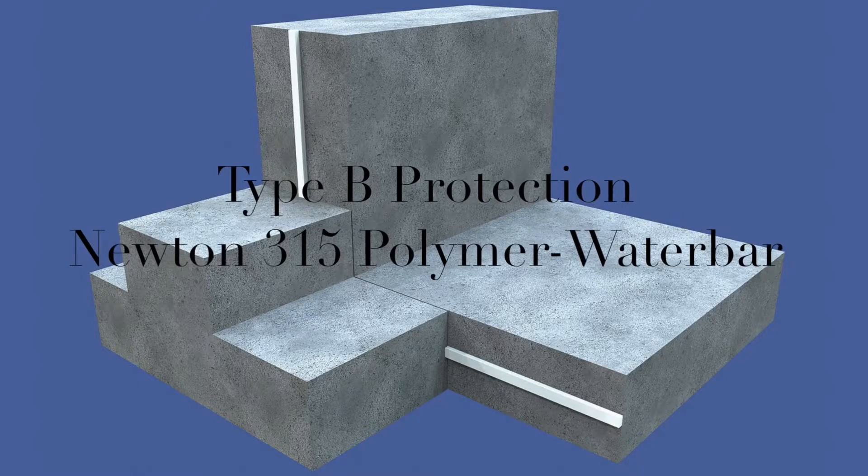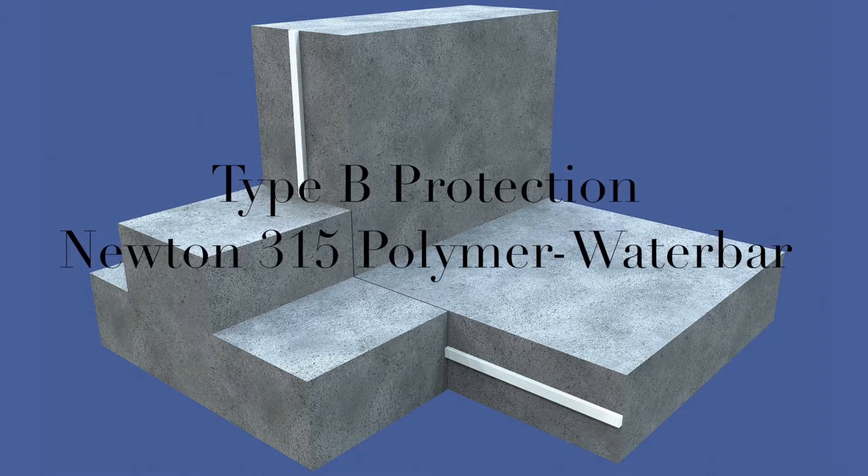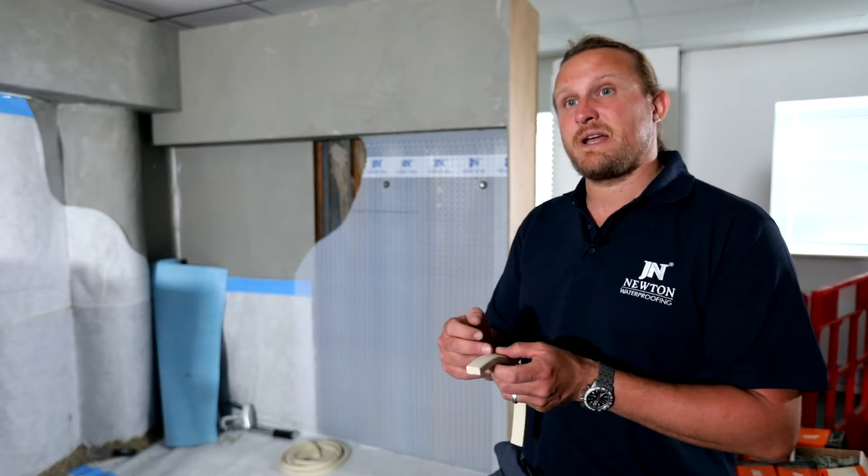An example of Type B, structurally integral protection, would be the Newton 315 water bar, which is swellable hydrophilic. It's placed mid-section in the concrete pours so that if any water tries to get through, it swells up and acts as a bar to stop the water getting in.